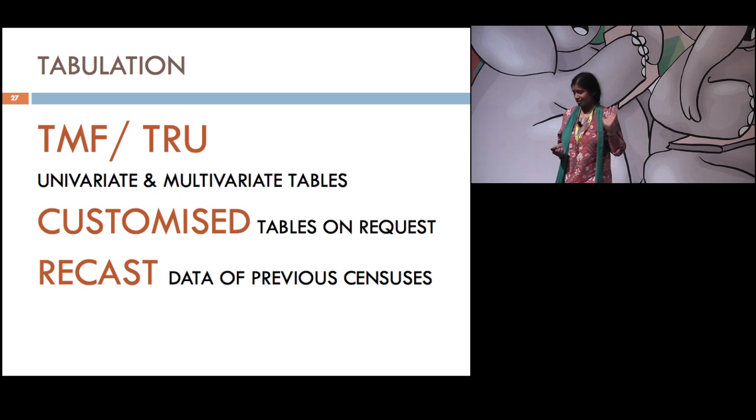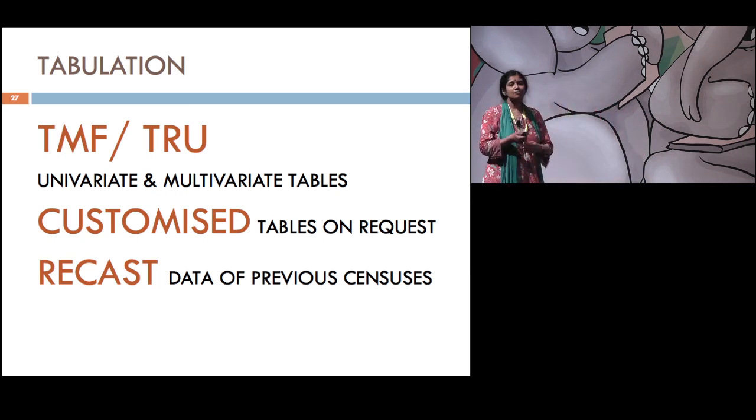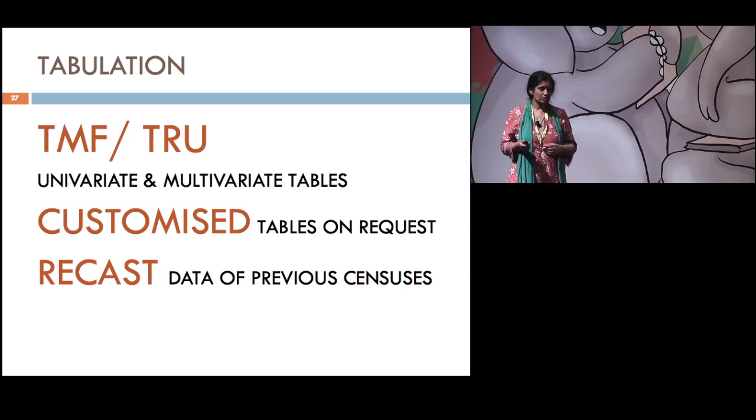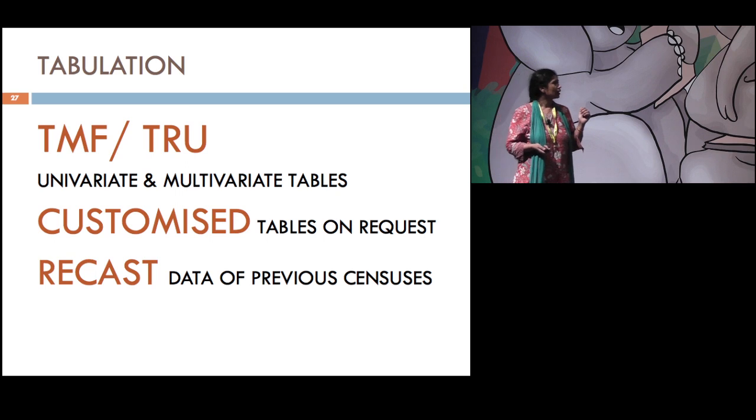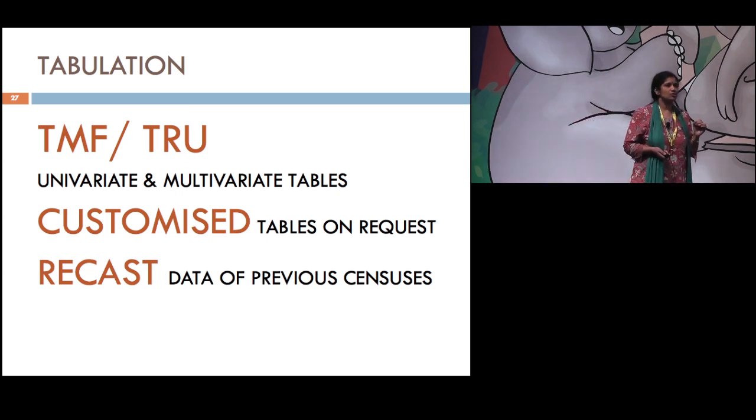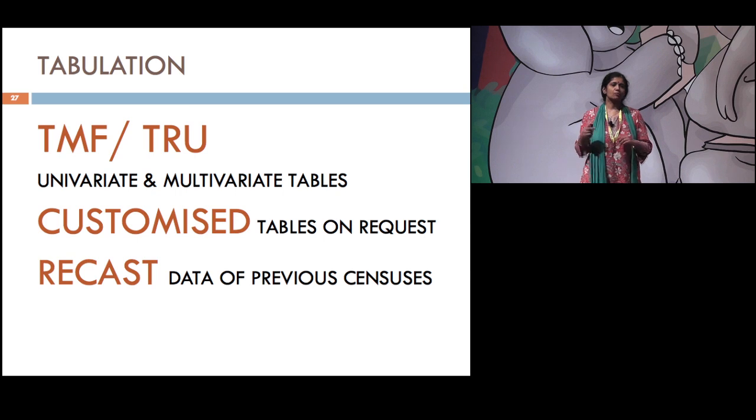After that, all this data cleaning is the longest and most tedious part I can tell you, the editing part. Then comes the tabulation. The tabulation plans are always published in advance for the census, which are the tables that we are going to release because it is on the basis of the tabulation plan that the questions are designed. So in the Indian census, every single question has its own univariate table. And those tables are always TMF, that's total, male, female. And wherever applicable, they are also TRU, total, rural, urban. Apart from all the univariate tables, we also have some multivariate tables, age, literacy, or education, and so on. Apart from that, we are always ready to develop customized tables on request of data users. And also we recast the data of the previous censuses on the basis of the administrative boundaries of the new census, so that all the data are comparable.